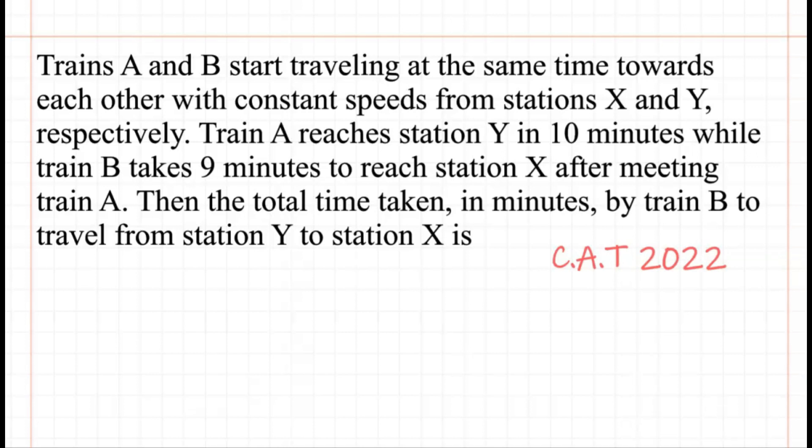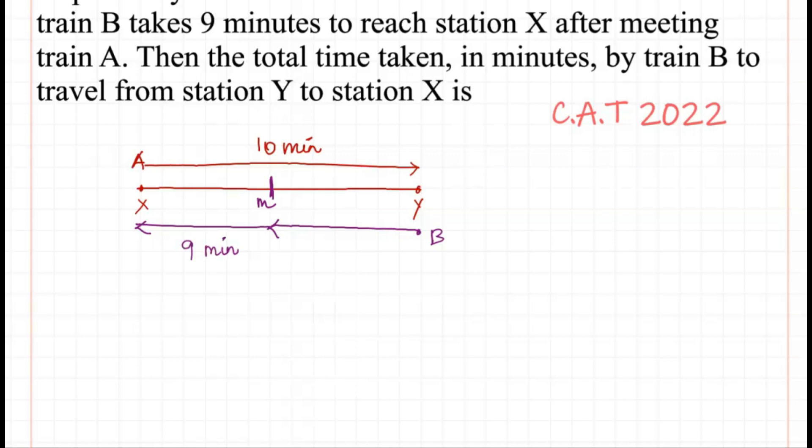From the first sentence, we understand that there is a station X and a station Y. Train A started from station X and reached station Y in 10 minutes, whereas train B started from station Y and, after meeting train A, took 9 minutes to reach station X.